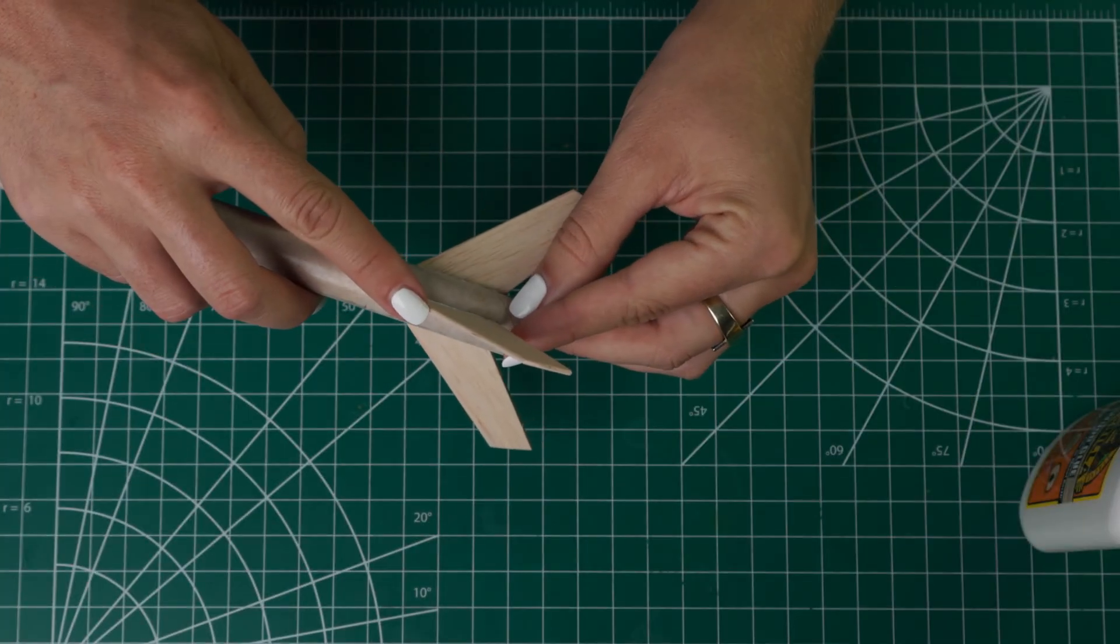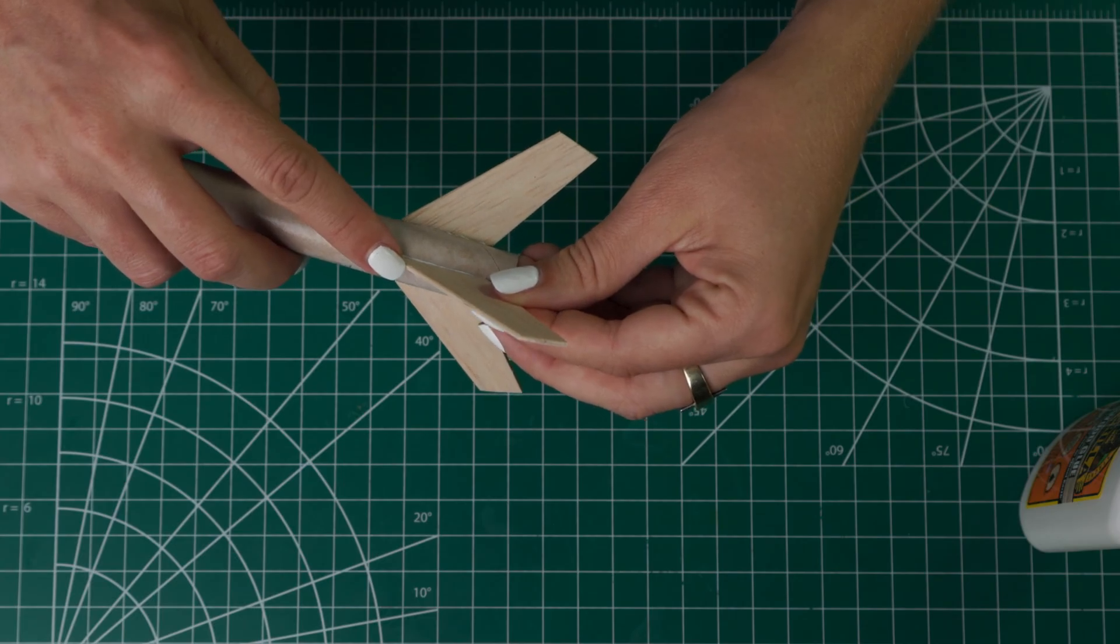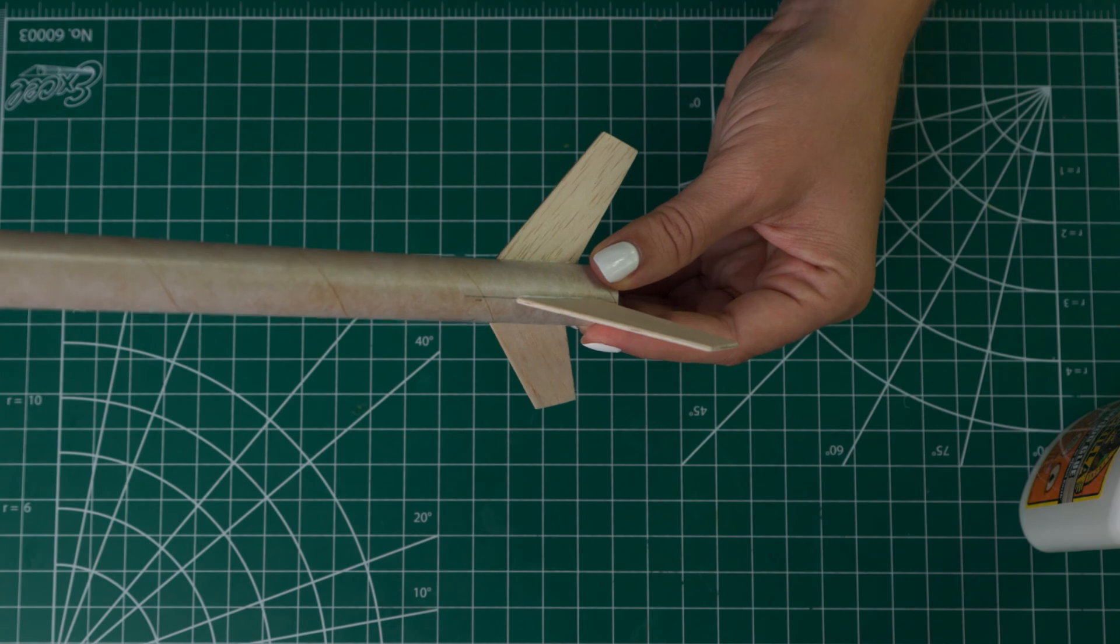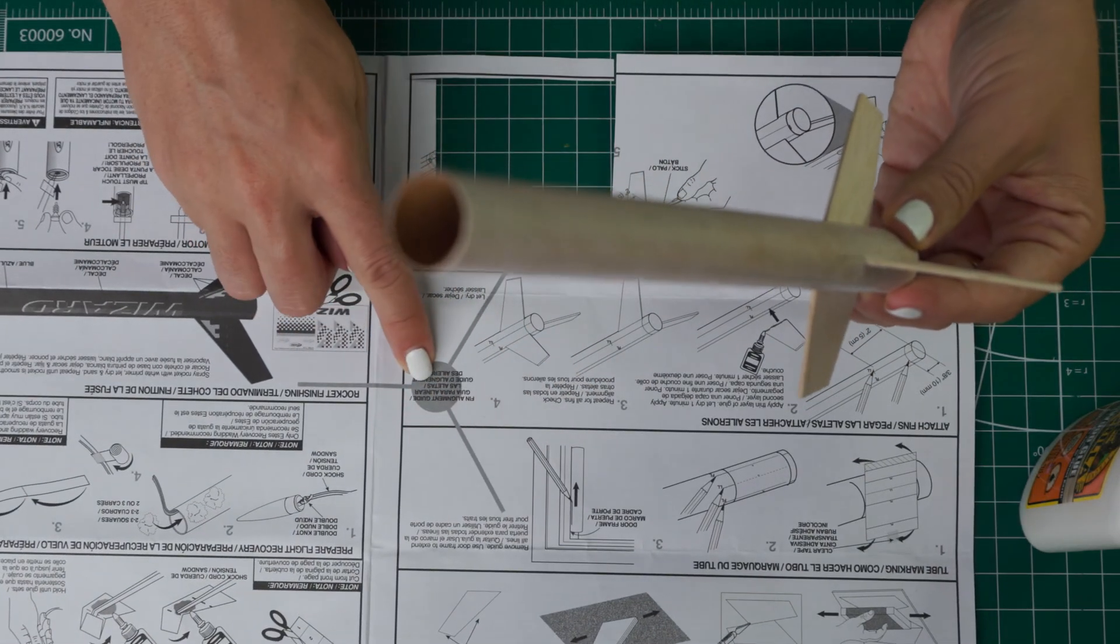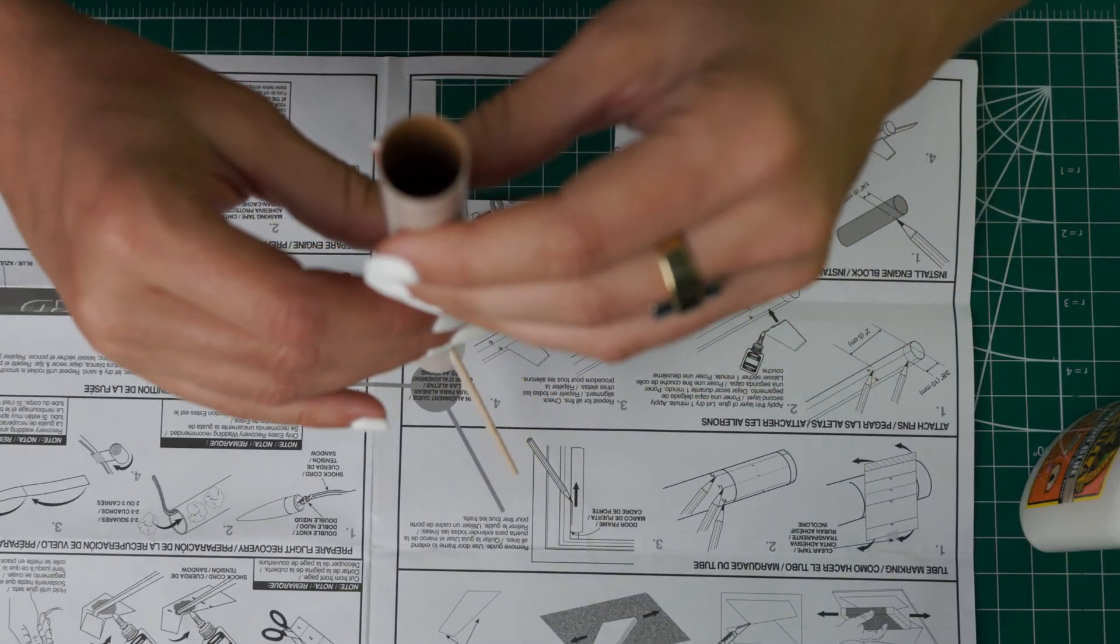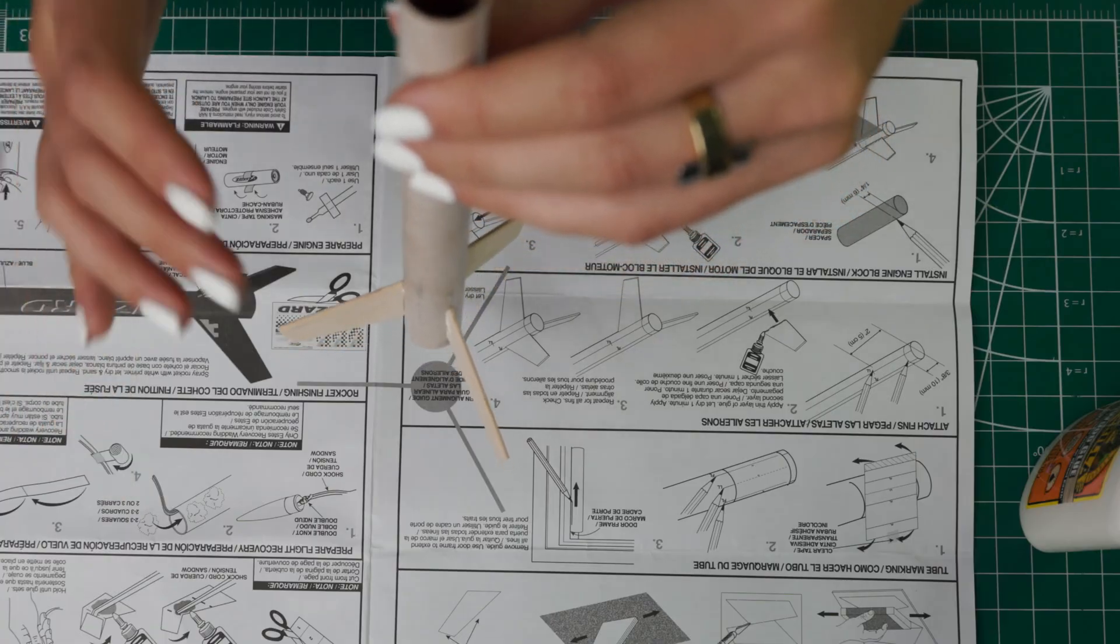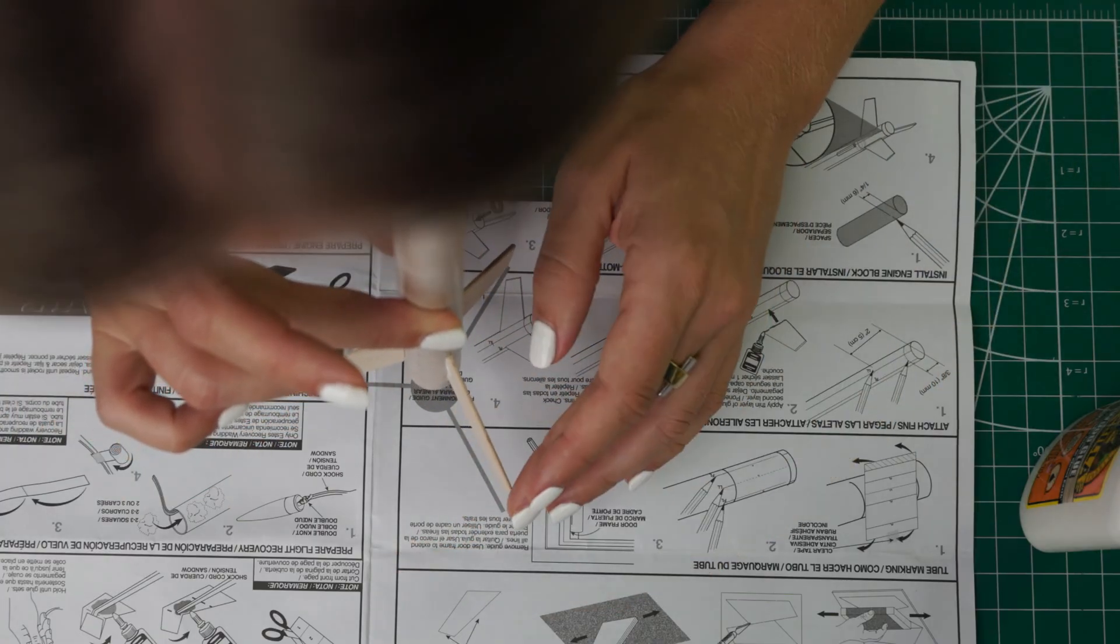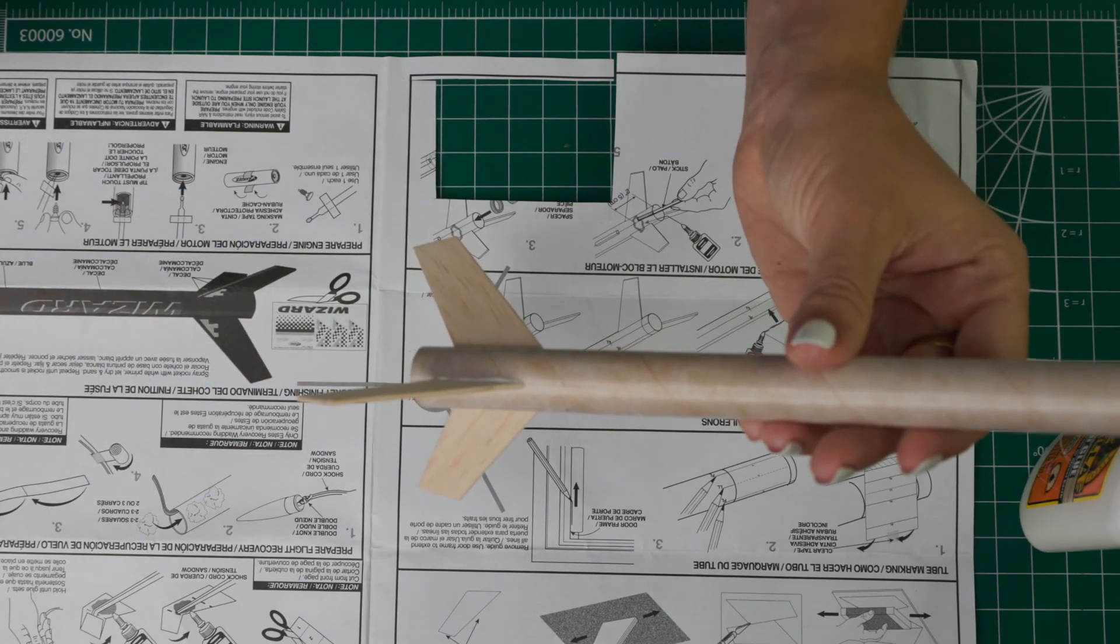Use less glue than you think you need. More glue is just going to make them slide around and be difficult to arrange. Once you have three on there get your instructions and you can see this shaded fin alignment guide. You want to look from the top and make sure that your fins are aligned and perpendicular. Then you can go ahead and let those dry.